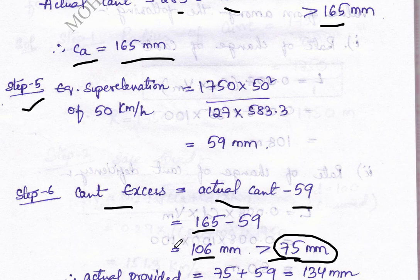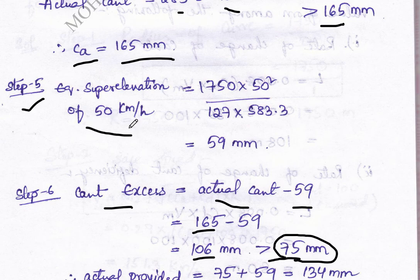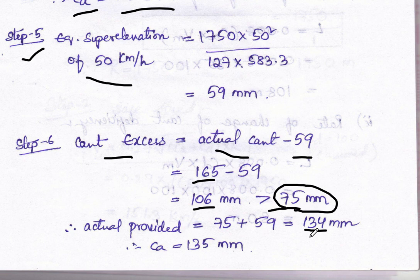The actual cant to be provided is 75 mm plus equilibrium super elevation for 50 km/h, which is 59 mm. After adding, we get 134 mm, which is rounded up to 135 mm. Remember, in railway engineering, we always take a multiple of five — always round to the higher multiple of five.